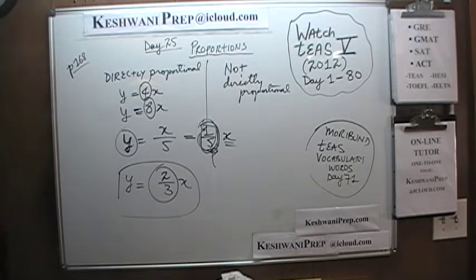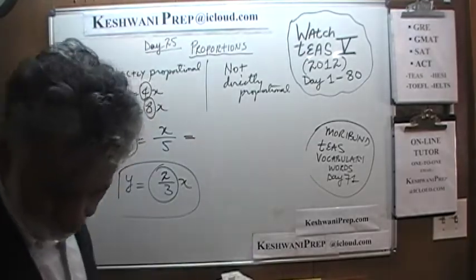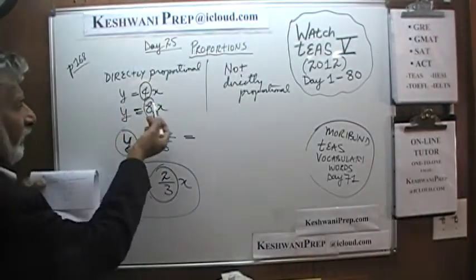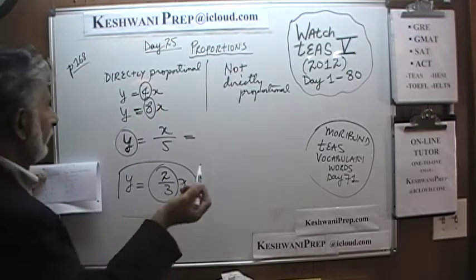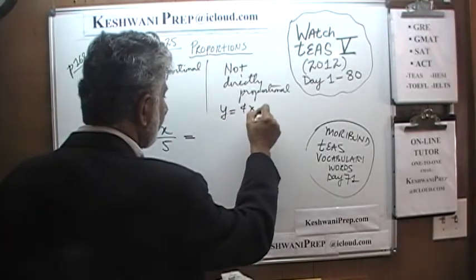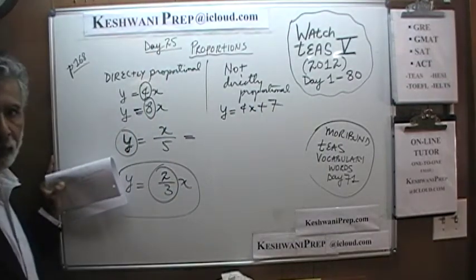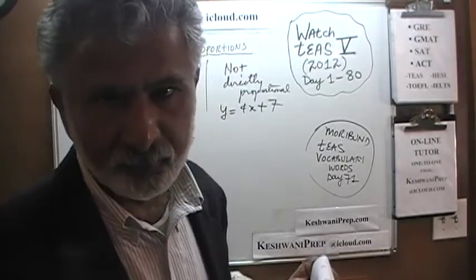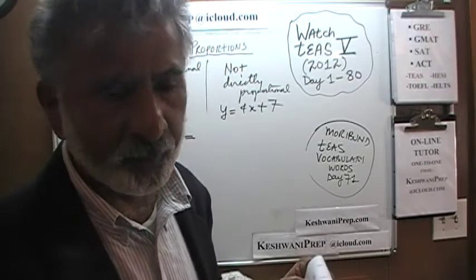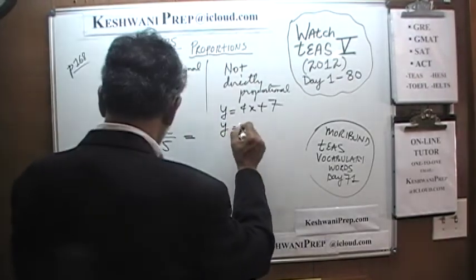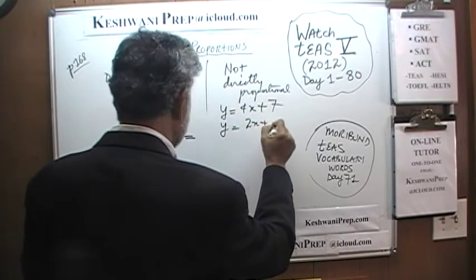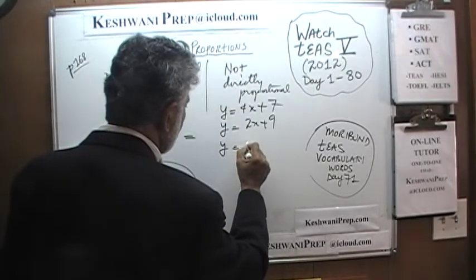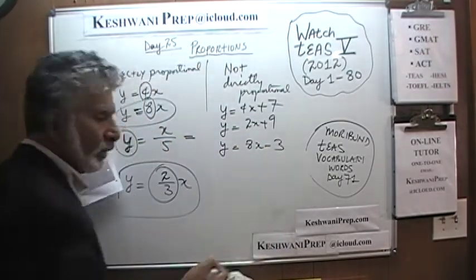Now let's look at examples where variables are not directly proportional. Take Y equals 4X — if we add something to it, it is no longer directly proportional. For example, Y equals 4X plus 7 is not direct proportionality, because it doesn't go by the same multiple each time. Here's another example from the book: Y equals 2X plus 9. And Y equals 8X is direct, but Y equals 8X minus 3 is no longer a direct proportionality.